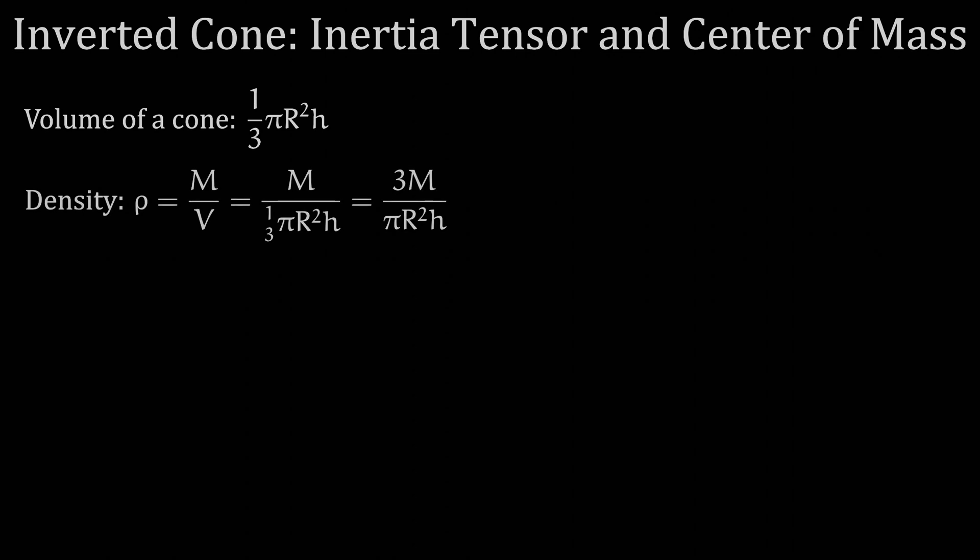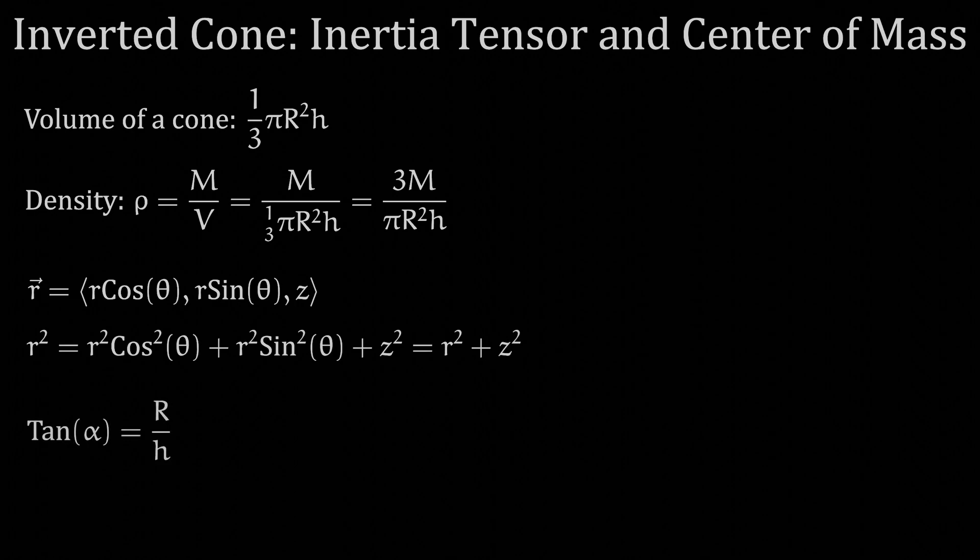We will also write our position vector in cylindrical coordinates using r, theta, and z. Then the square or dot product of this vector produces this form, where the unsimplified equation is useful later. Also useful later is the definition of tangent of alpha, which is equal to the capital R over H.